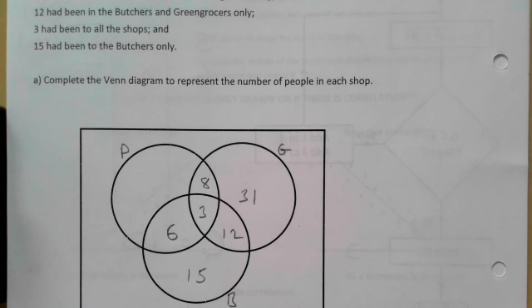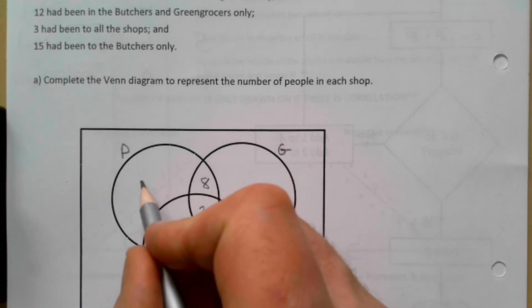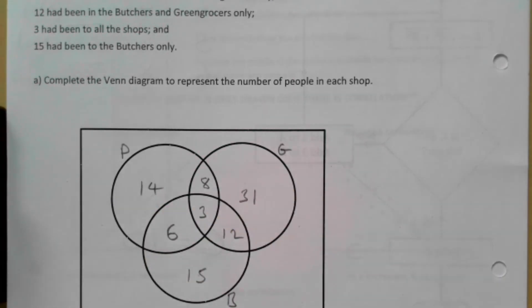And then 31 had been to the Post Office, so here we add these up: 8, 17, so we get to 31. Then it's going to be 14.